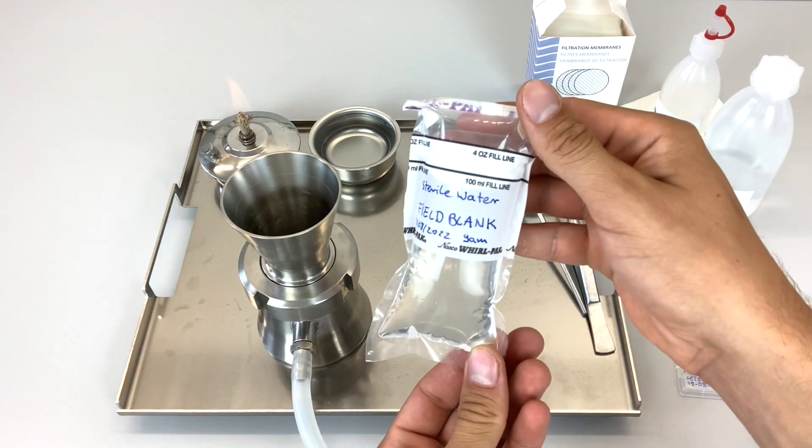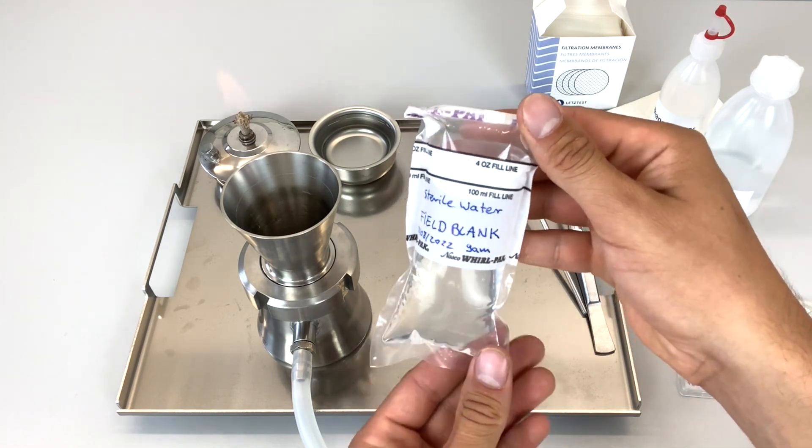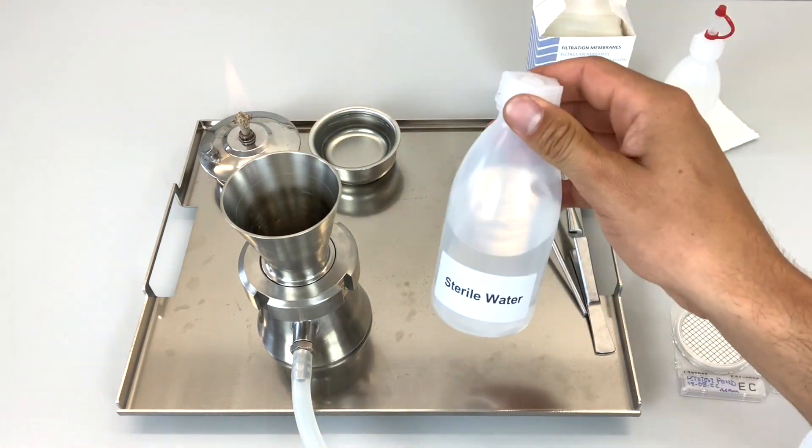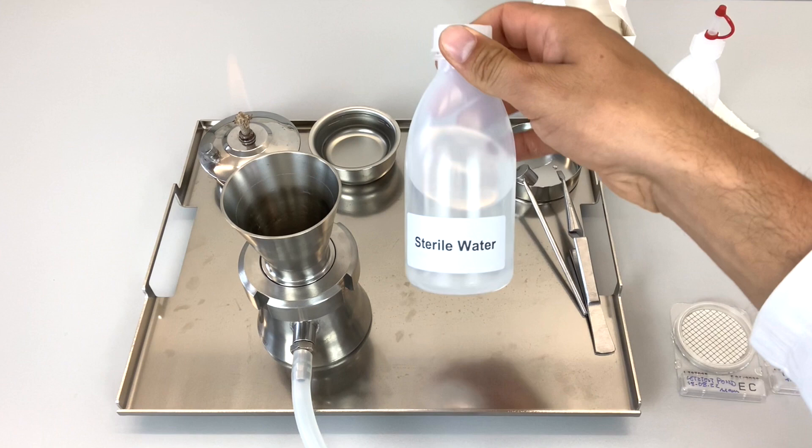For quality control, next to the field blank, we suggest you test also sterile laboratory water, called the laboratory blank. Test it in between your samples. It must show zero bacteria. If it does not, you are facing cross-contamination between samples and your results are not valid. Your sterilization procedure between samples must be improved.